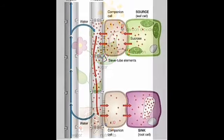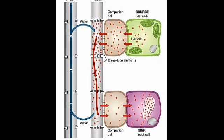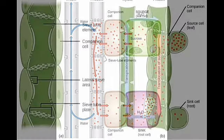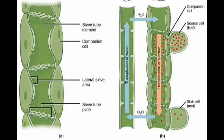Sucrose is transferred into the sieve tubes of phloem tissue, called phloem loading. This creates a high concentration of sugar in the sieve tubes, so water from the adjacent xylem tissues moves into it by osmosis. This creates a high turgor pressure in the sieve tubes, which pushes the materials to the sink, which has less pressure. The movement takes place from the source, that is the leaves, to the sink, that is the tip of the roots and shoot.